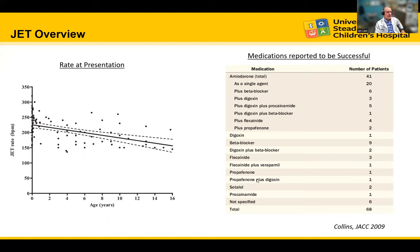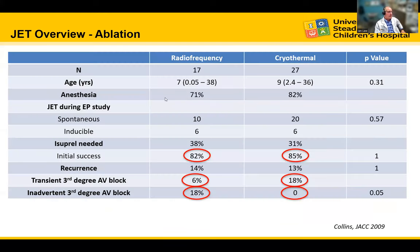Amiodarone was the most frequently used medication with success. Regarding catheter ablation, 17 underwent radiofrequency ablation and 27 underwent cryothermal ablation. The success rate was nearly identical between the two modalities. However, transient third-degree heart block was seen in 6% of radiofrequency and 18% of cryothermal cases, while permanent inadvertent heart block was seen in 18% of radiofrequency ablation and none of the cryothermal ablation patients.